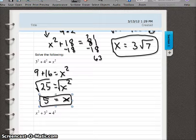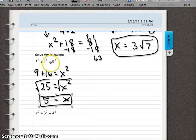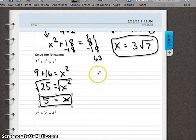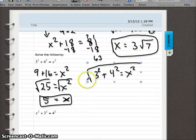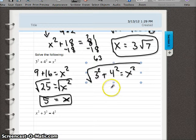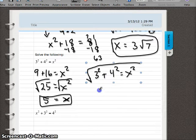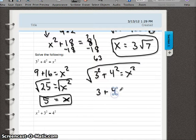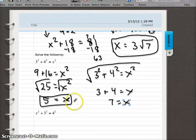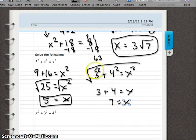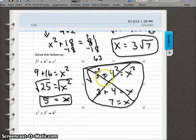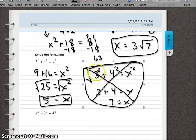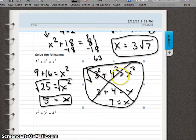One thing you might run into is that you see something like this, and you say, well, I could just undo all these squares by square rooting everything. So 3 squared plus 4 squared equals x squared. And if I just square root everything, then I get rid of all my squares. If you're thinking that, stop, because that's not true. If we were to do that, we would get 3 plus 4 equals x, and we would get 7 is x. Well, we said that x was 5, not 7. So this is really not a property of radicals. We can't do this.